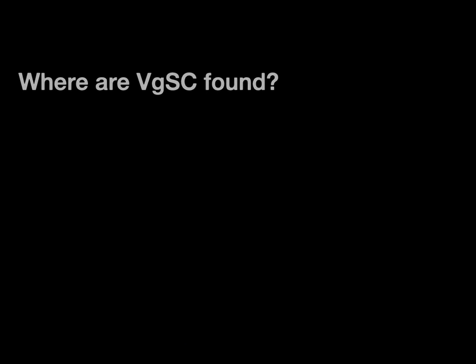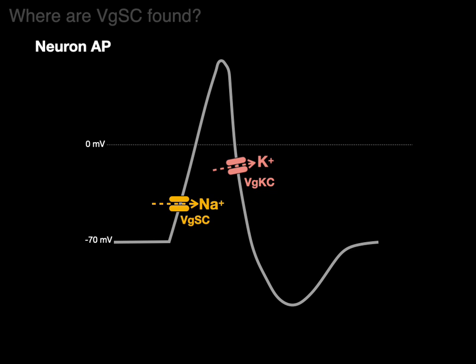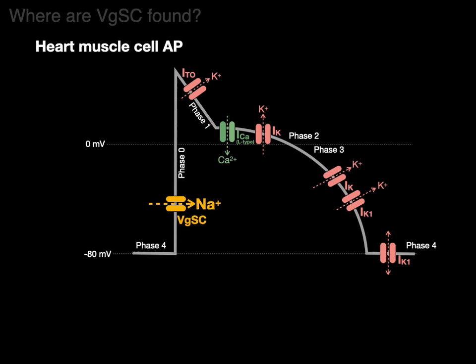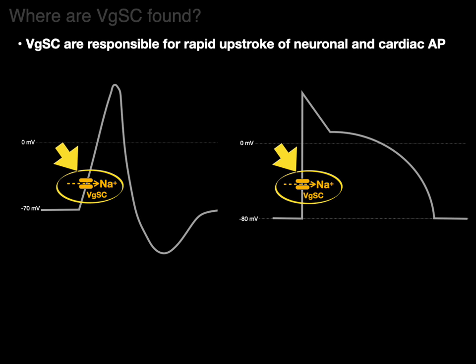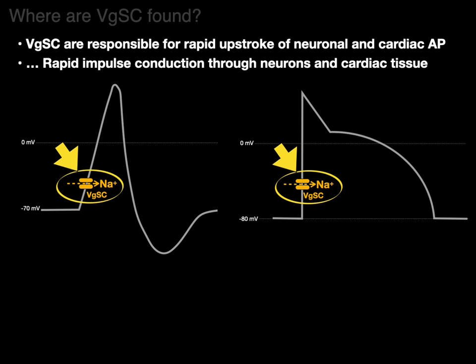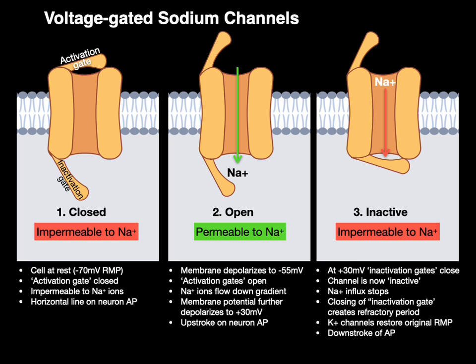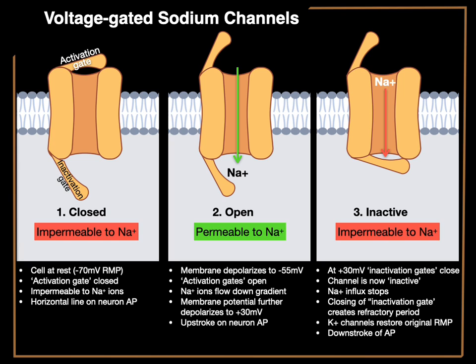Voltage-gated sodium channels are found in neurons — responsible for the upstroke of neuronal action potentials — and in contractile heart muscle cells, where they underlie phase zero (the upstroke) of the cardiac action potential. These channels are fast, and they are responsible for the rapid upstroke of neuronal and cardiac action potentials as well as the rapid impulse conduction through neurons and cardiac tissue. And that is the voltage-gated sodium channel in a nutshell.